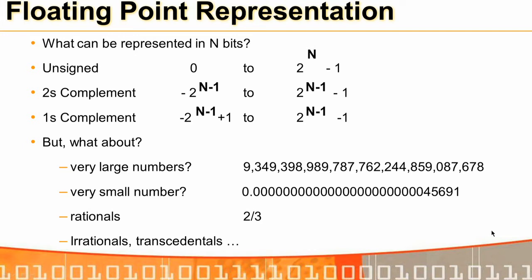When we want to represent very large numbers, very small numbers, rationals, irrationals, or transcendentals like pi and e, we need a different representation. There can be infinite ways of representing these numbers, so there was a need for a standard — that is why the IEEE 754 standard came into place.